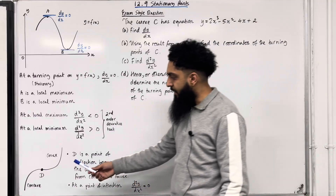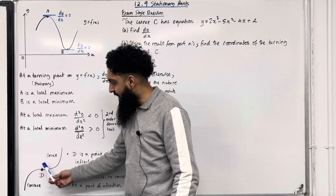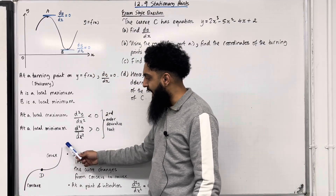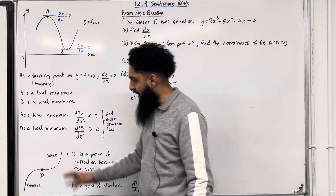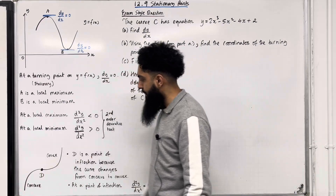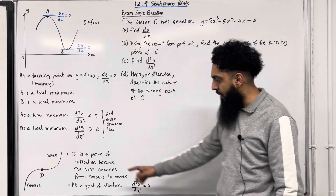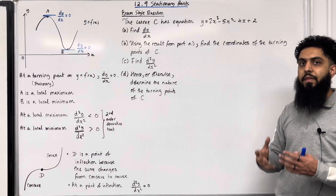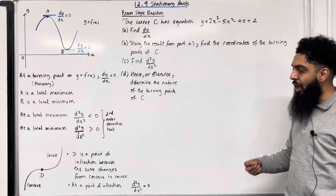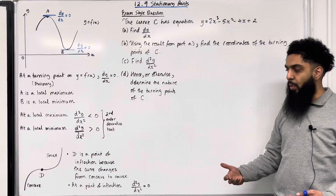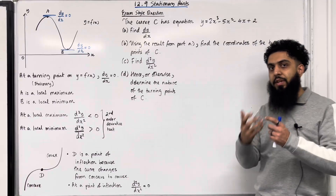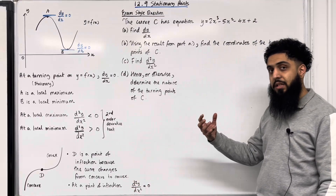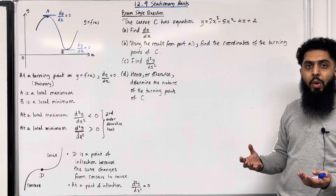Consider the following curve. The point D is a very important point. What we have on one side is a concave shape, and on the other side is a convex shape. D is a point of inflection because the curve changes from concave to convex. That is the formal definition of a point of inflection. We could also have the curve changing from convex to concave — the point from which the change takes place is also a point of inflection. At a point of inflection, the second derivative d²y/dx² is equal to 0.